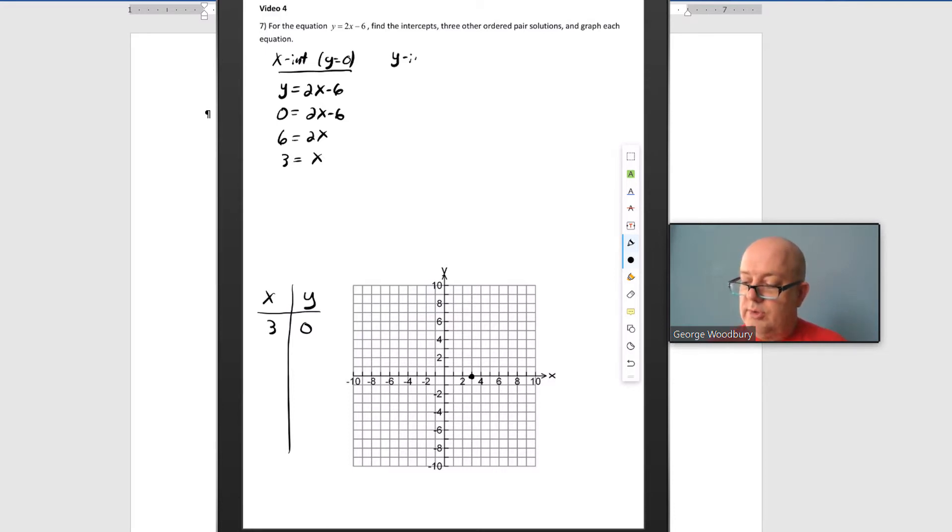The y-intercept, we'll take care of that next. That is where the x-coordinate is zero. On the y-axis, if it's not to the right or the left, that means that it's on the axis. Substituting zero in for x, we get y equals 2 times zero minus 6, that's just zero minus 6, or negative 6. So when x is zero, y is negative 6, put a point at negative 6 on the y-axis.